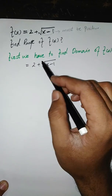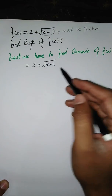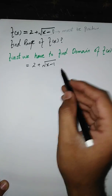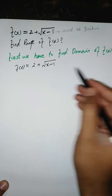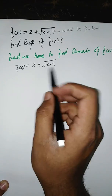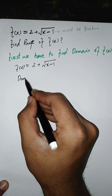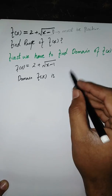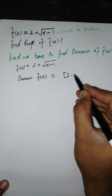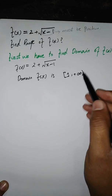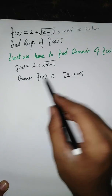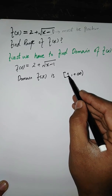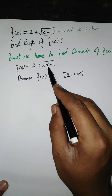We give inputs to this function that keep the expression positive. So the domain of f(x) — I'll write it directly since I already explained it — is from one to positive infinity. The number one is included in the domain of f(x).